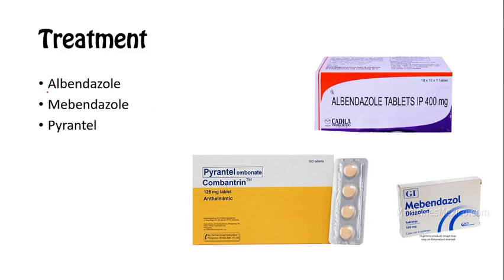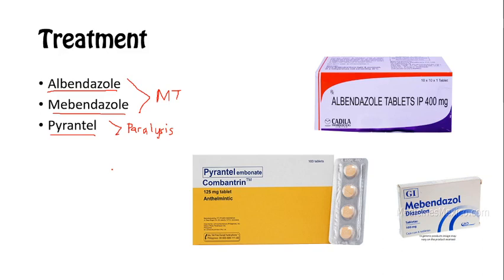For treatment, we have three typical drugs to eliminate these worms: albendazole, mebendazole, and pyrantel. Albendazole and mebendazole disrupt the helminthic microtubules, and pyrantel causes helminthic paralysis that will cause the helminth to lose its grip on the intestinal lumen. For more severe cases, surgery may be required for severe obstruction.